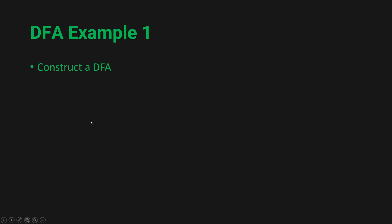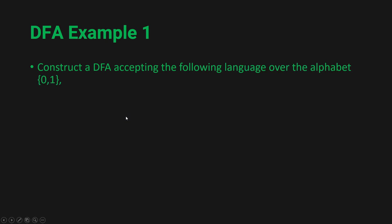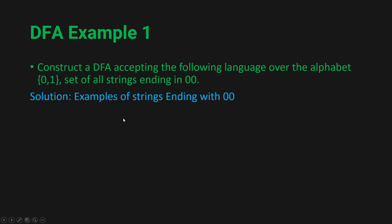Let's begin with our first example. The question is: construct a DFA accepting the following language over the alphabet {0, 1}. The language is the set of all strings ending in '00'. Examples of strings ending with '00' are: 00, 100, 0100, 00100, 010000, and so on.